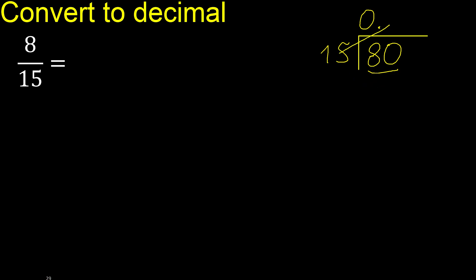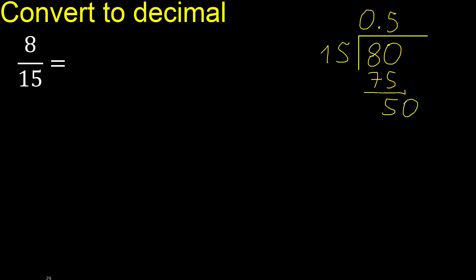15 multiplied by which number is nearest to 80 but not greater? 15 multiplied by 6 is greater, so 15 multiplied by 5 is 75. Subtract — remainder is 5. There is no next number, so complete with zero again: 50.